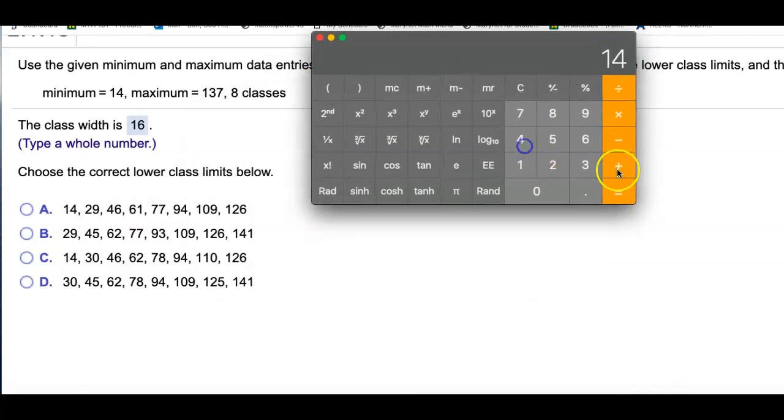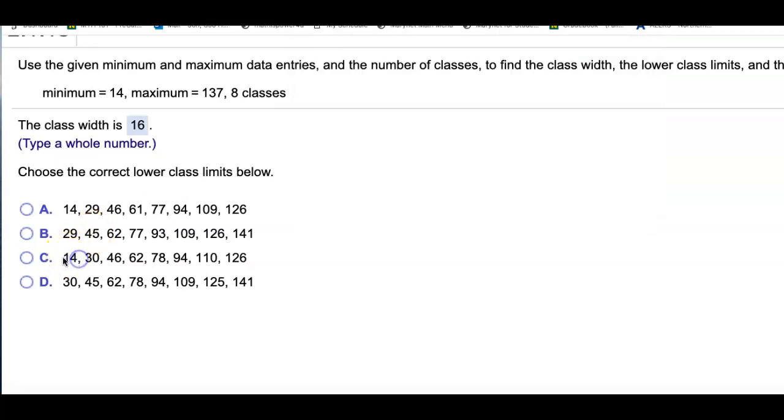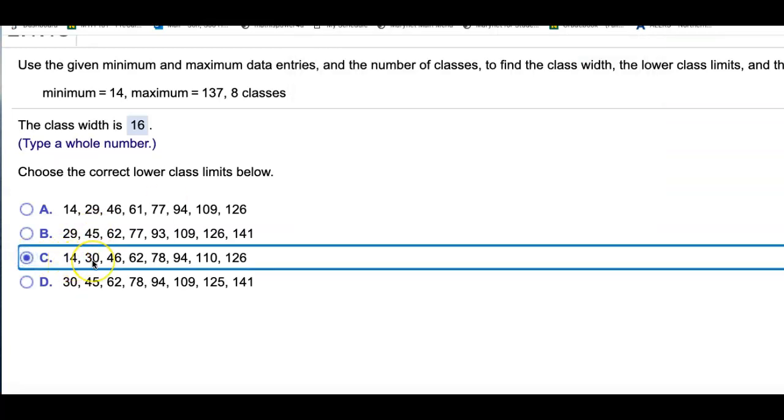So first class is 14. Next class is 16 more than that, so 30. Here it is. This is the only one that says 14, 30. And if you do 30 plus 16, that will be 46, and we just keep going up.